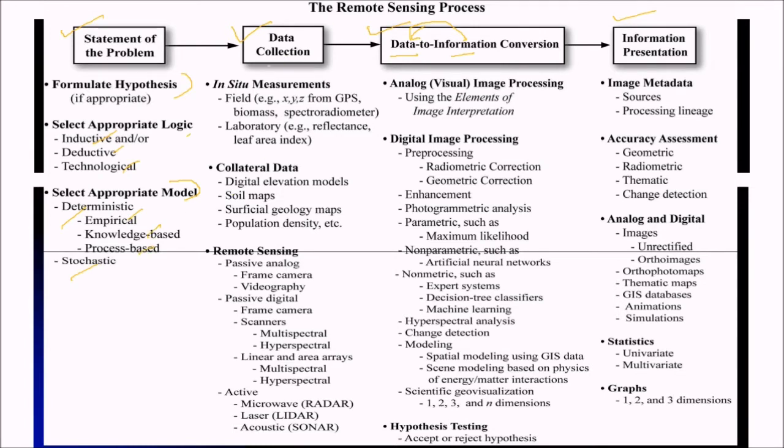Then the data collection, you can go to the field, you can go to the lab. And then collateral data, that is DEMs, soil maps, surficial geology maps, population density.